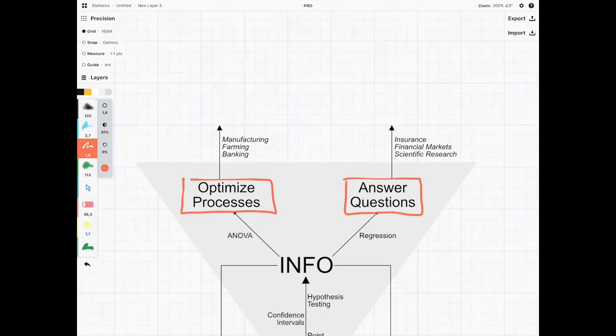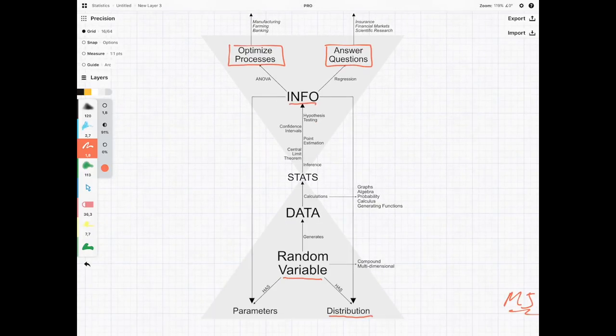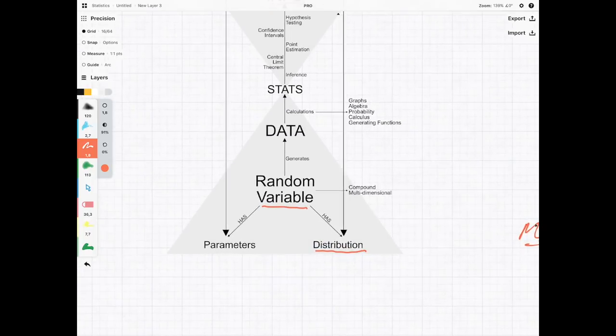But in order for it to do that we need information on our random variable. Now the two key pieces of information that we need are on the parameter and the distribution. And what this course does and this chapter is focused on understanding what we actually mean by a probability distribution.